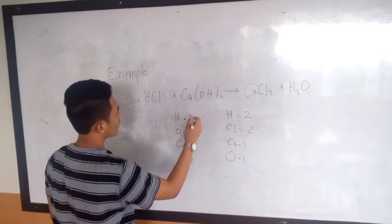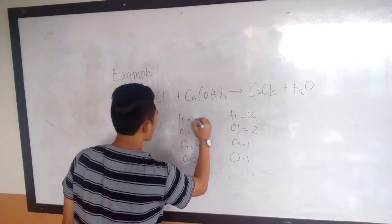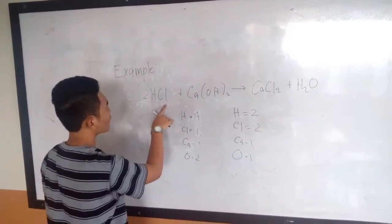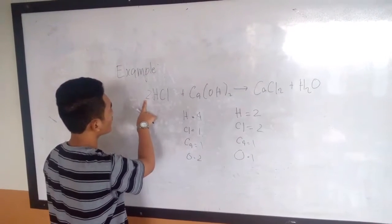Then plus 2 here becomes 4. Then the chlorine here is 2 also because it's multiplied by 2.